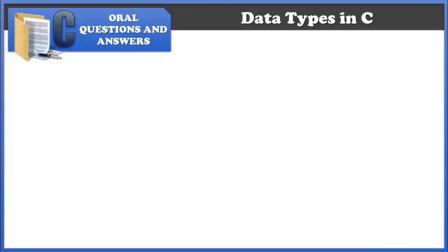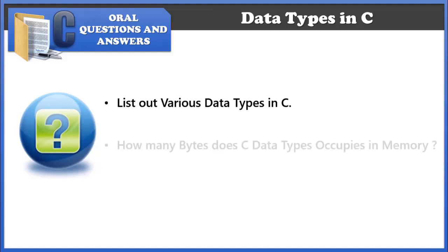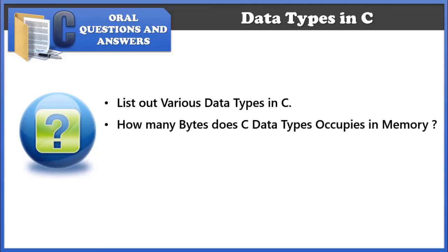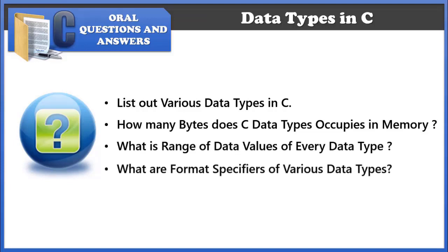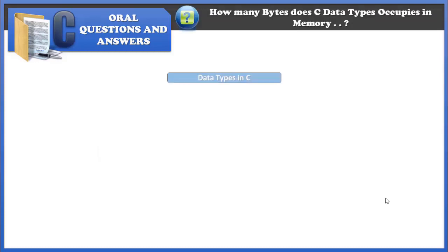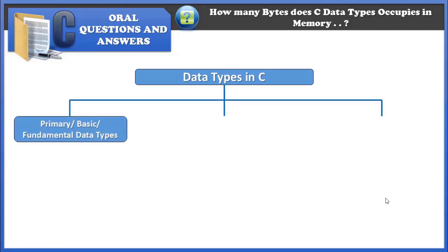Next we will discuss about data types in C — what are the different data types, how many bytes each occupies in memory, the range of data values, and their format specifiers. Data types in C belong to three different categories: fundamental data types (also called primary or basic), user-defined data types, and derived data types.